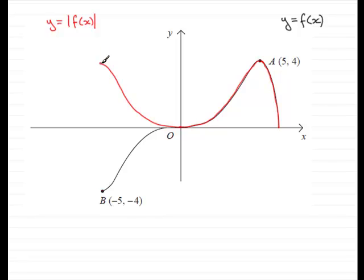So let's just mark that in as b prime. And the coordinates of b prime will be minus 5, 4.